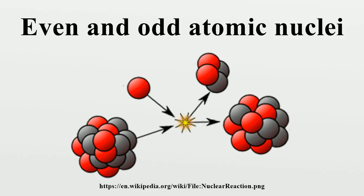These stable even-proton odd-neutron nuclides tend to be uncommon in nature, generally because in order to form and enter primordial abundance, they must have escaped capturing neutrons to form yet other stable even-even isotopes, during both the s-process and r-process of neutron capture during nucleosynthesis in stars. For this reason, only 195-78-Pt and 9-4-Be are the most naturally abundant isotopes of their element, the former only by a small margin, and the latter only because beryllium-8 has lower binding energy than two alpha particles and therefore alpha decays.